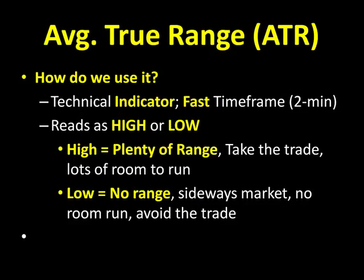Now, how do we use it? It's an indicator I'm going to use on my fast time frame only — whether it be a 2-minute chart, 89 tick chart, 4 range, 6 range — a fast time frame. You're going to look at it as a value being high or being low. A high ATR level means plenty of range — you may want to take that trade because there's lots of room to run. If we see low ATR, that means very little trading range, sideways horizontal markets, and you may want to avoid that trade.